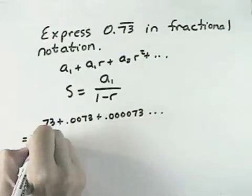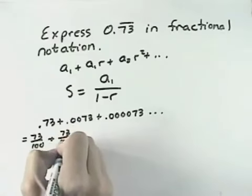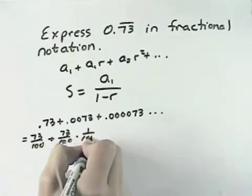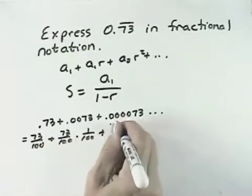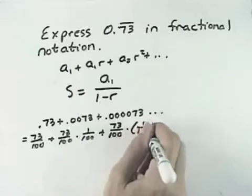Or 73 over 100 plus 73 over 100 times 1 over 100 plus 73 over 100 times 1 over 100 squared, etc.